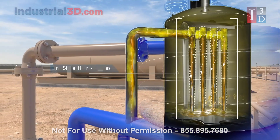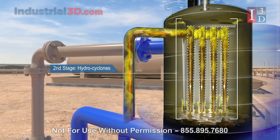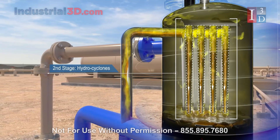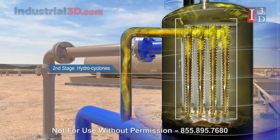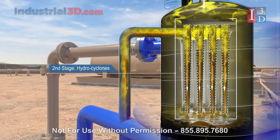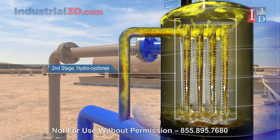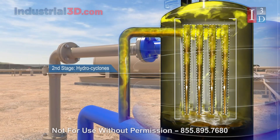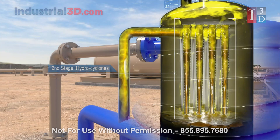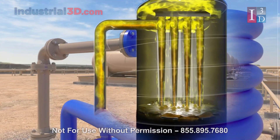The second stage is a multitude of hydrocyclones inside the vessel, where a small portion of liquid and all the gas is accelerated to create high g-forces that compress the liquid and release the gas. The centripetal force pulls the gas from the liquid, creating the secondary phase separation.